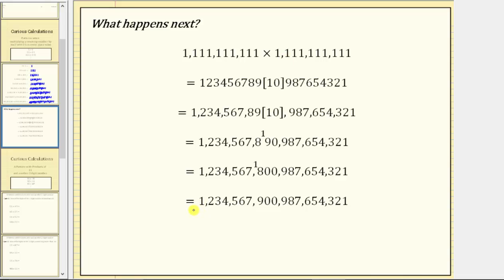Let's see if we can read this number properly. We have the millions, billions, trillions, quadrillions, and quintillions. The product is one quintillion, 234 quadrillion, 567 trillion, 900 billion, 987 million, 654,321.